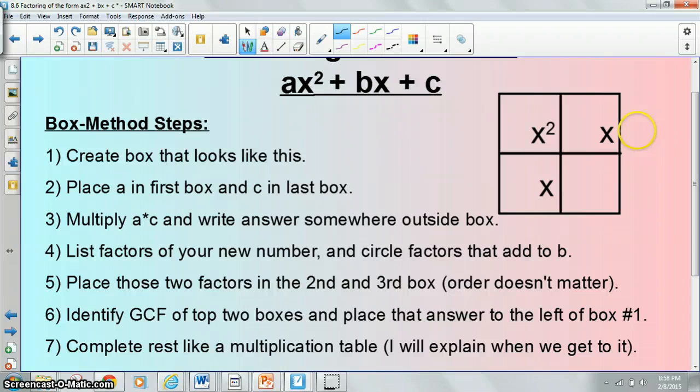When you have that done, you're going to put those two answers that you've decided get you to b. One of them is going to go right there, the other one is going to go right there. And it doesn't matter which order you put those two things in. Then, 6 and 7 are the confusing part. Not that they're necessarily difficult steps, but people do get confused, especially at first. Step 6 says to identify the greatest common factor of these two terms. It's always going to have an x in it because this one has two x's and that one has one. Step 7 says complete the rest. Your answer is going to be the numbers here and here and here and here. The answer is not going to come from the middle.